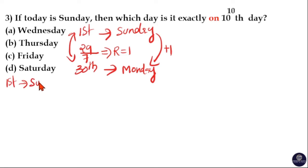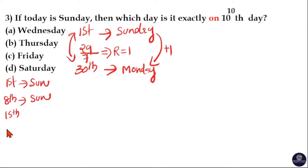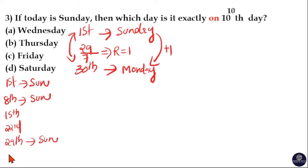To verify: if the first day is Sunday, then 1 plus 7 means the 8th day is also Sunday. Again, 8 plus 7 is the 15th, 15 plus 7 is the 22nd, and 22 plus 7 is the 29th — these are all Sundays. Which means 29 plus 1 is the 30th day, and Sunday plus 1 gives you Monday.